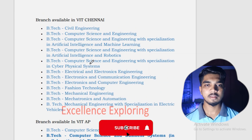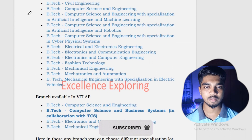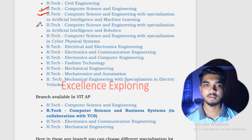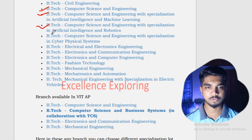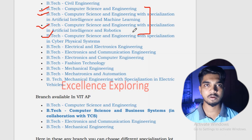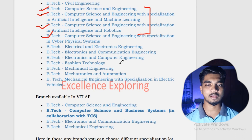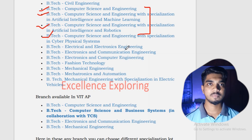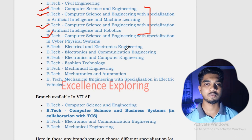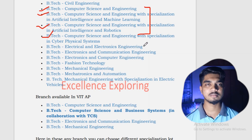There are also mechanical, electronics and communication, and other fields available depending on your interest. Coming to VIT Chennai, the demandable branches here are CSE core, then specialization in AI and ML which has much demand, AI and robotics, and cyber security and physical systems — around three or four demandable CSE specializations. There are also B.Tech mechanical and other branches available that are a little less in demand, so you can easily get them if you keep them in your priority list.